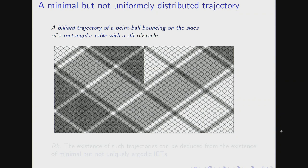You just have a rectangle, and this rectangle has a slit barrier in the middle. You look at the trajectory of a point which moves in a straight line and bounces at the boundary — it reflects. This is just a plot of a trajectory, and I hope visually you can believe that this trajectory is dense, so it will go into all parts of the table.